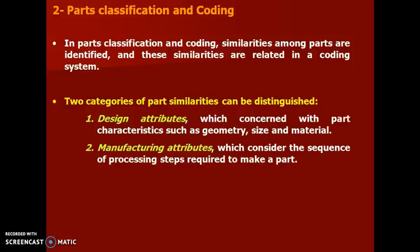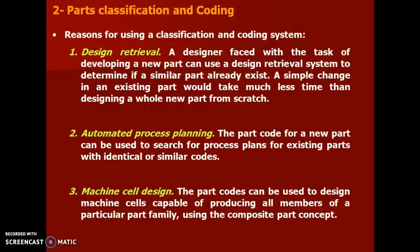Two categories of part similarities can be distinguished. First, design attributes, which are concerned with part characteristics such as geometry, size, and material. Second, manufacturing attributes, which consider the sequence of processing steps required to make a part. The reasons for using a classification and coding system are that design retrieval is very easy, automated process planning can be generated, and it facilitates machine cell design using the composite part concept. In design retrieval, the designer can retrieve an existing coding system for the particular part family. For automated process planning, a part code for a new part can be used to search for the process plan of existing parts with identical or similar codes.